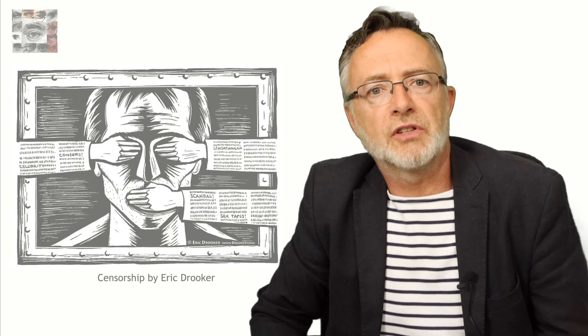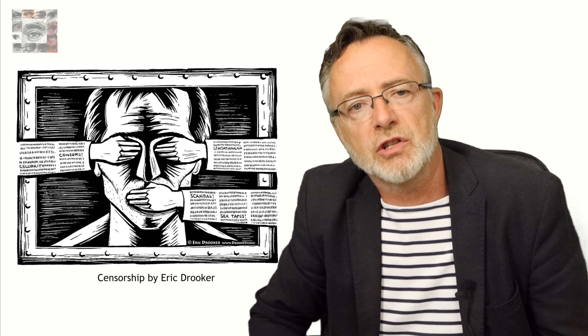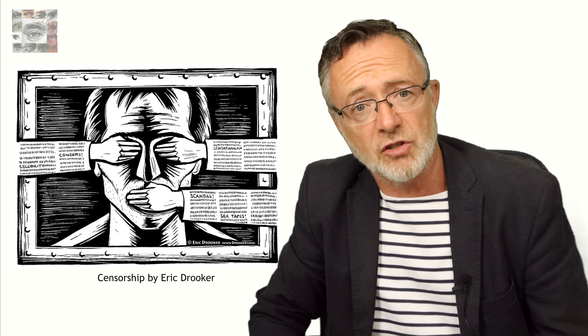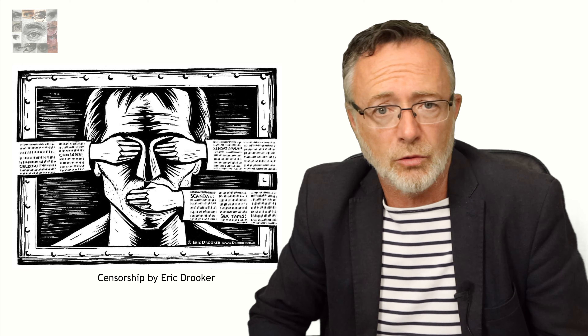Direct censorship means that the state can decide to withhold information or prevent the expression of a particular viewpoint because its publication and dissemination might otherwise damage the so-called national interest. In more totalitarian regimes, direct censorship is intrusive enough to involve the appointment of official government censors who work alongside journalists and film producers, approving all that can be published.